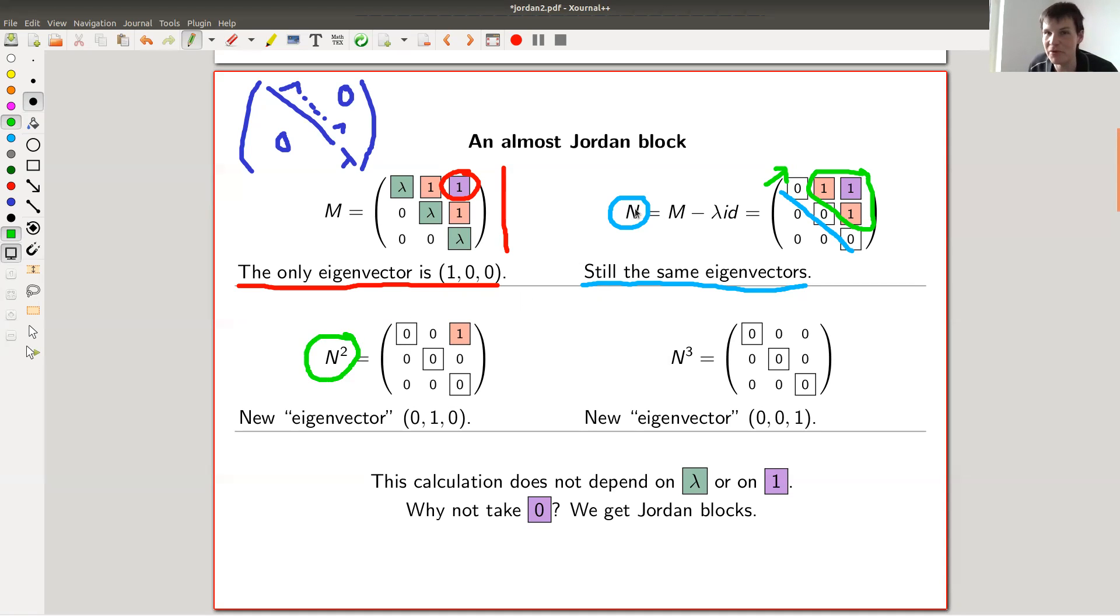You can take the first power, the second power is a green one, and the third power is already zero. And what happens is this funny fact that as soon as you take those powers, you get new eigenvectors. So you have a new eigenvector, in quotation marks, which is now the eigenvector 0,1,0. It's not an eigenvector of N or M, but it's an eigenvector of N squared. And if you cube it, then you get a new eigenvector which wasn't an eigenvector of anything before. Well, it's a zero matrix. A zero matrix has quite a lot of eigenvectors, namely everything.